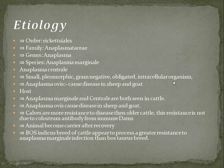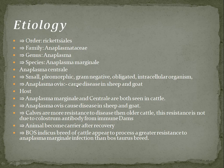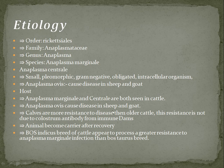These bacteria are the actual causative agents of the disease anaplasmosis. In the case of sheep and goat, the species name is Anaplasma ovis, which causes disease in sheep and goat. Summarizing the hosts: Anaplasma marginale and Anaplasma centrale are both seen in cattle, while Anaplasma ovis causes disease in sheep and goat.